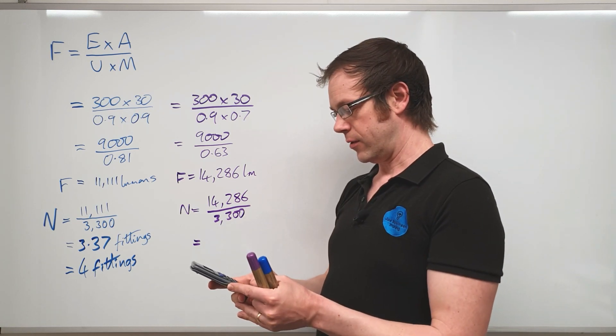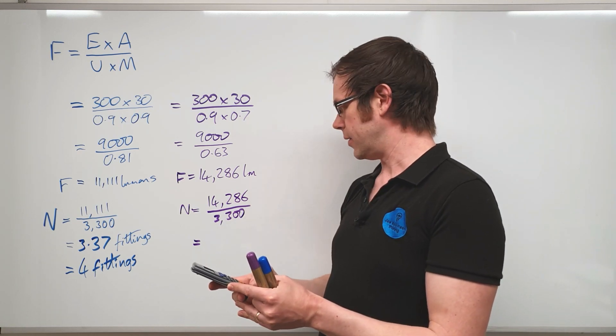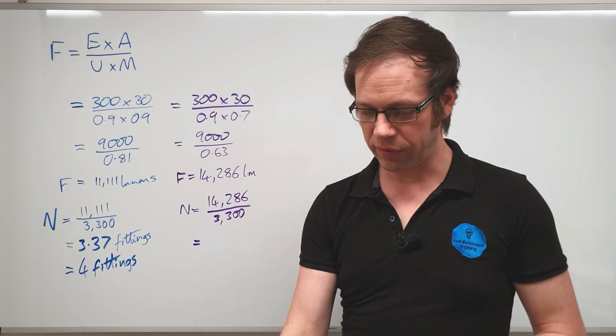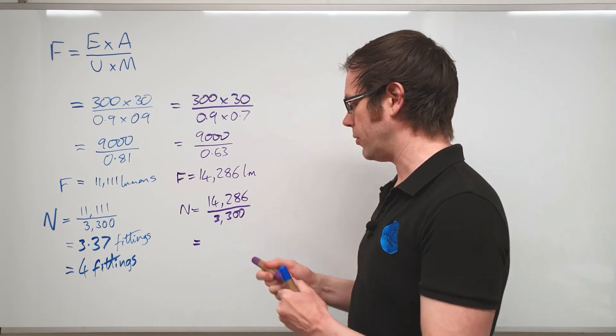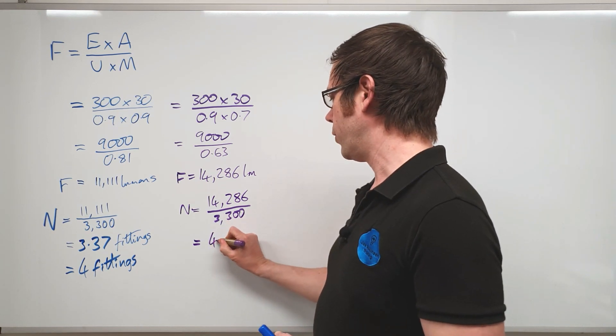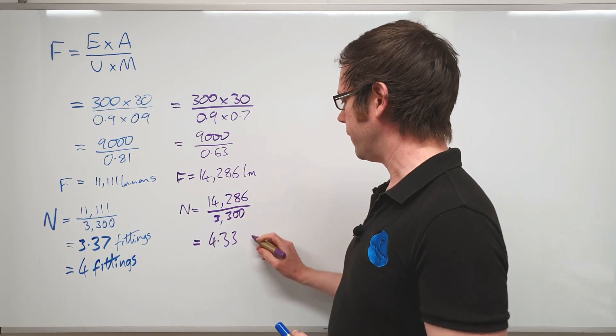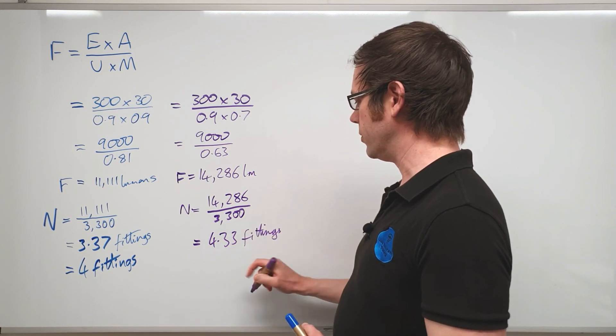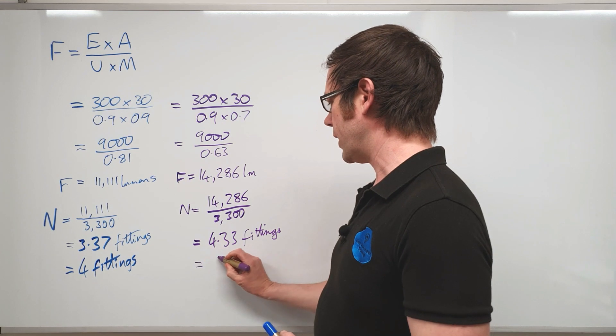And again when we do that calculation we come out with an interesting answer. 14,286 divided by 3,300, we come out with a value of 4.33 after we've rounded that. So we end up with 4.33 fittings. Now obviously that's nonsense, we can't install a third of a fitting, so that's going to get rounded up to five fittings.